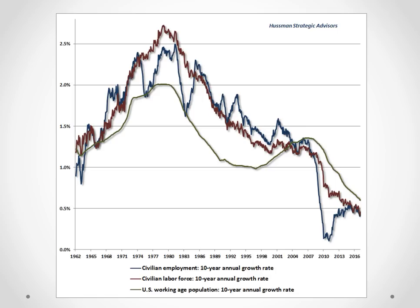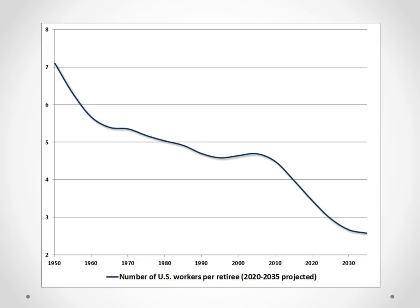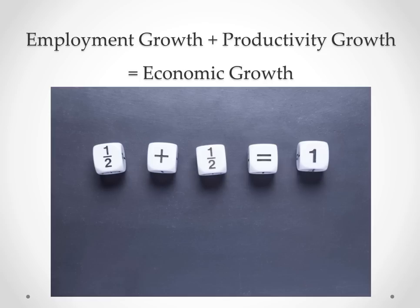With the unemployment rate now down to 4.2%, there's not a lot of slack in the labor force to fuel the starry-eyed growth projections that would presumably make these tax cuts pay for themselves. We used to have about seven U.S. workers per retiree; now it's closer to three. If anything, we should be encouraging more immigration, not less — particularly for services jobs like home health care, where there will undoubtedly be a growing need. Labor productivity has also slowed considerably. The post-war average was over 2% annually, but over the past 20 years the growth rate has slipped to just 1%, and over the past five years to just one-half of a percent.